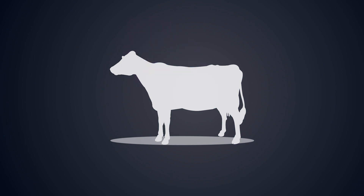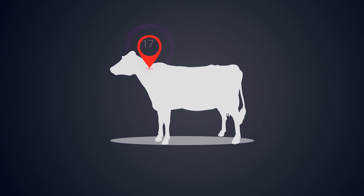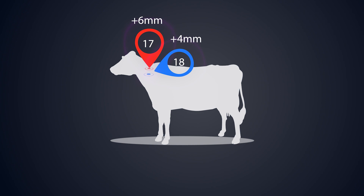Animal number 56 had first-day skin fold measurements of 11 mm at the avian injection site and 14 mm at the bovine injection site. 72 hours later, the skin fold measurement at the avian injection site is 17 mm, an increase of 6 mm, and 18 mm at the bovine injection site, an increase of 4 mm. Since there are no clinical signs at the bovine injection site and the reaction at the bovine injection site is less than the reaction at the avian injection site, this animal is deemed to have passed the test. However, as there is an increase of more than 2 mm at the bovine injection site, it has not had a negative reaction to the bovine tuberculin and has not passed the single intradermal test.